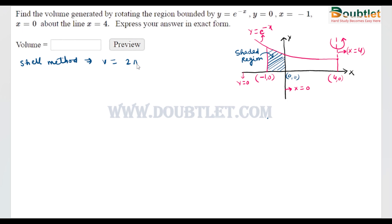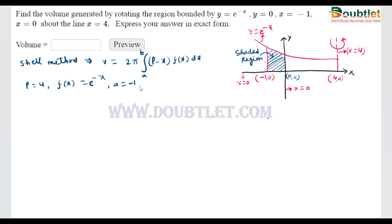So the volume will be 2π times the integral of (p - x) · f(x) dx, integrated from a to b. From the question we can take out the values: p = 4, f(x) = e^(-x), a = -1, and b = 0. Here a = -1 is taken because the region is bounded from x = -1 to x = 0, which gives us the limits of integration.